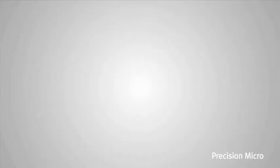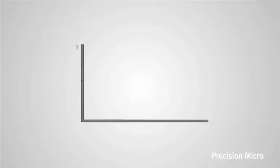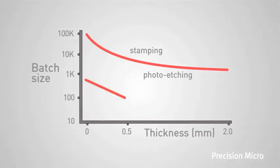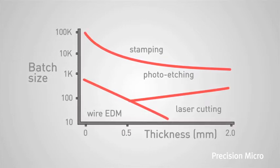Photo etching really excels when you are producing a very complex part. Unlike laser cutting, we etch all the features simultaneously, and so the more complex the components, the more the economics favor photo etching as a method of production.